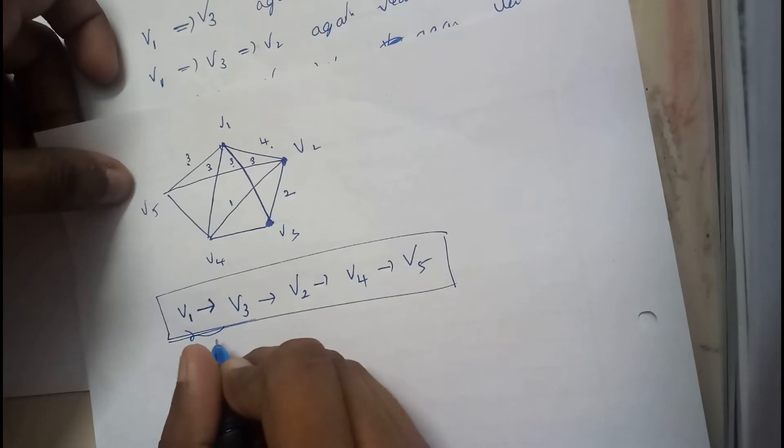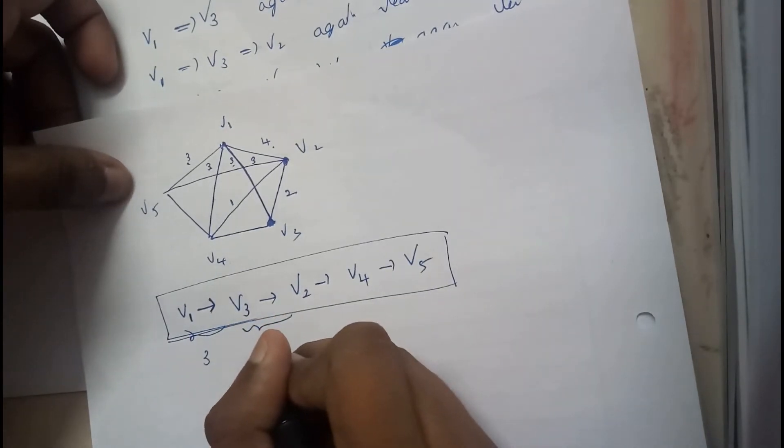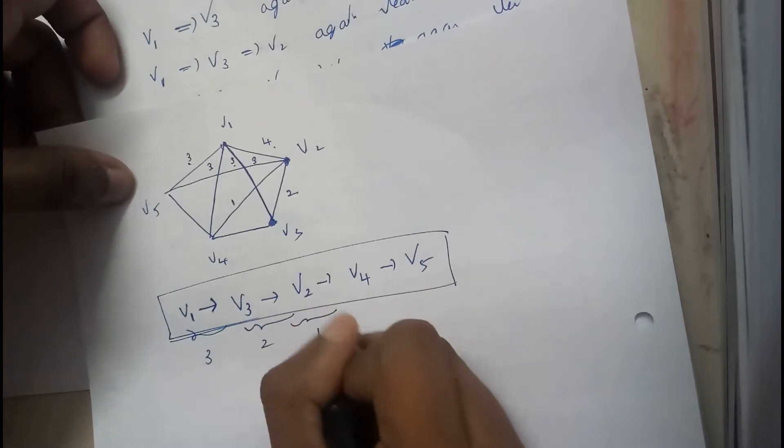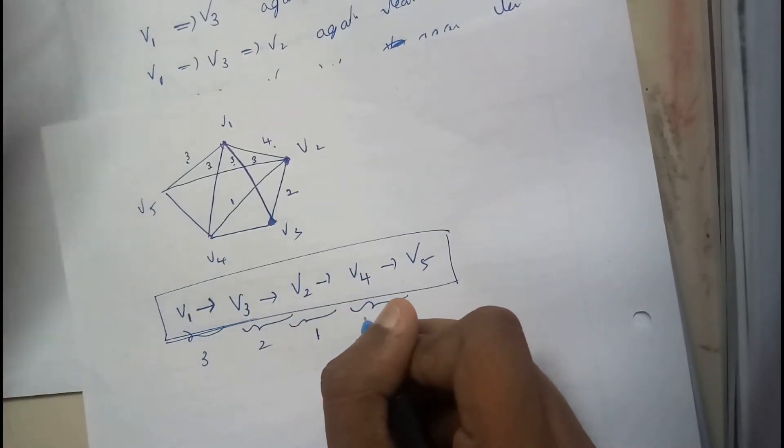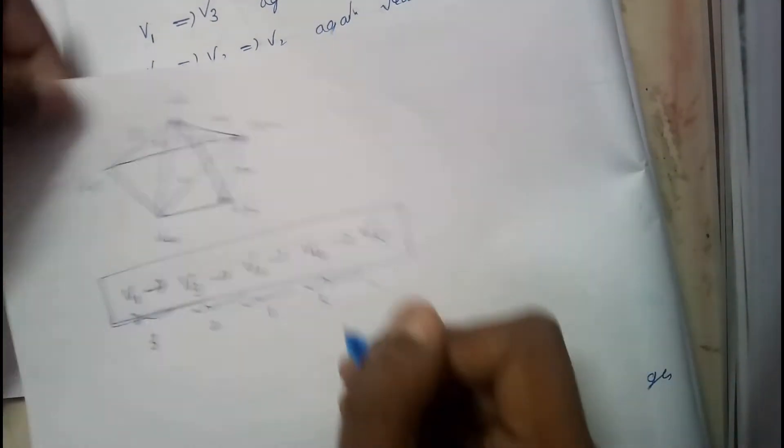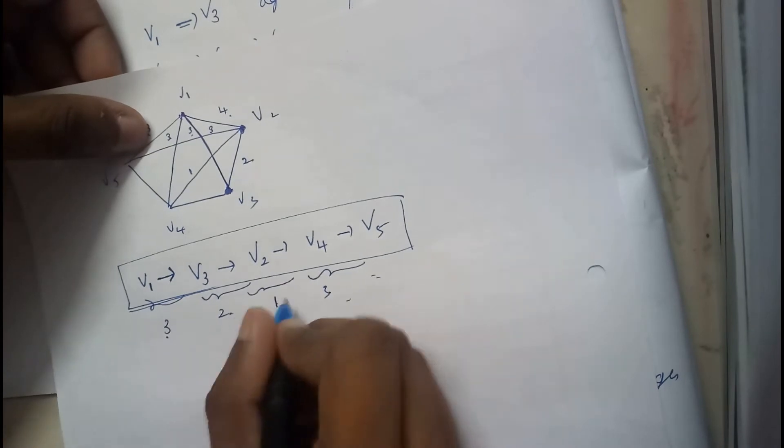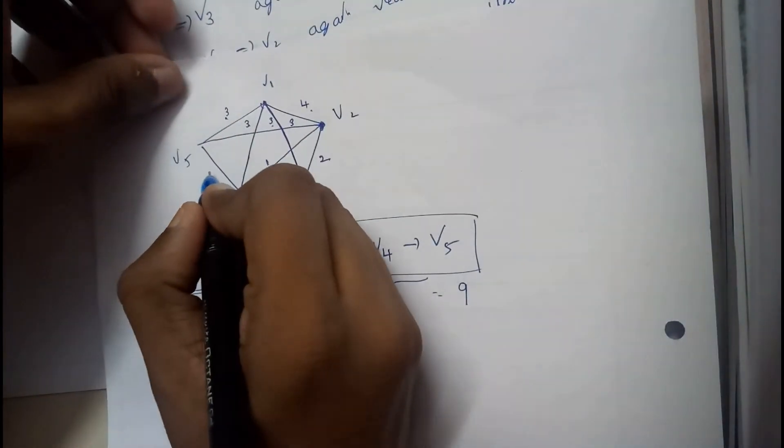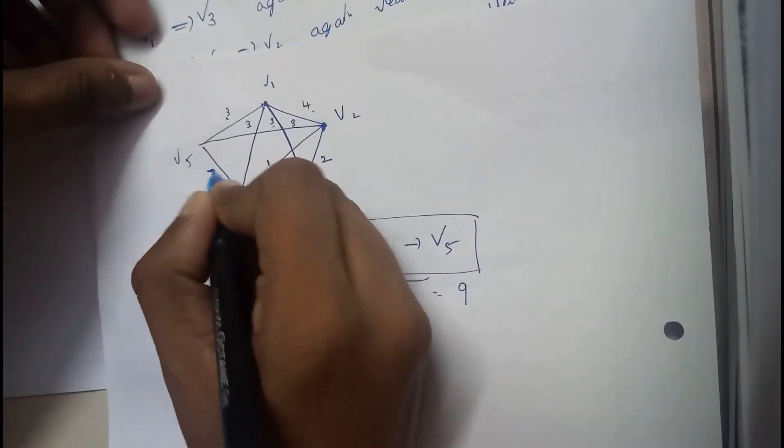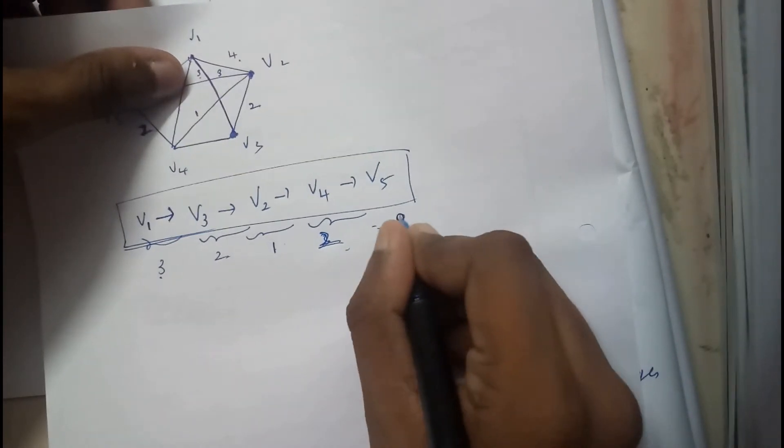So this distance, V1 to V3 is 3, 2, 1, and 3. What is the cost? It's 8, it seems. 3 plus 3, 6, 7, 8, 9, something is wrong. Just a second. I didn't write the weight here. In the question it's 2, so it's 2, it's 8.